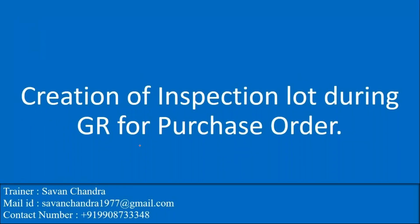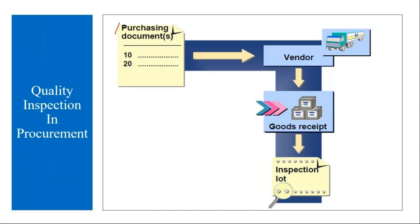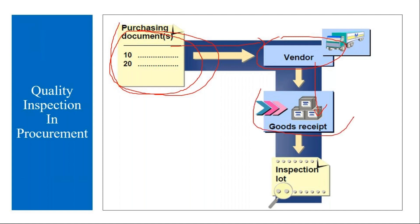The first integration point is creation of inspection lot during goods receipt for the purchase order. We as the MM team create a purchase order whenever we want to procure a material. The purchase order is given to the supplier, the supplier supplies the material, and we do the GR — goods receipt. When the MM team does the GR, if the material is to be quality inspected, the system will automatically generate an inspection lot.